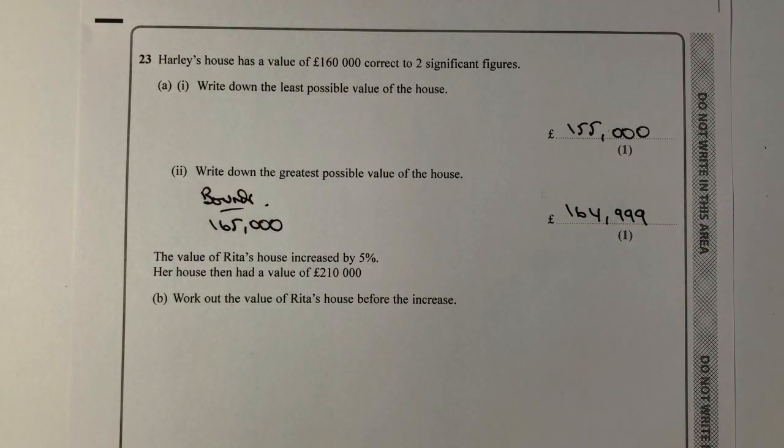I need to kind of check that one, but I think I'm okay with that. So my apologies if I've got it wrong. Then it says the value of Rita's house increased by 5%. So after 105% increase, it had a value of 210,000. Work out the value of Rita's house before the increase.